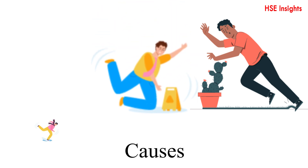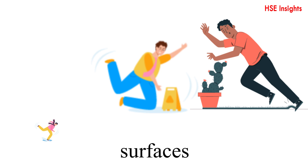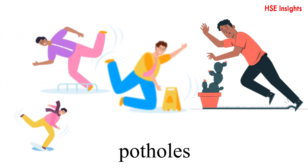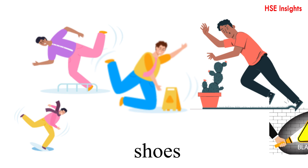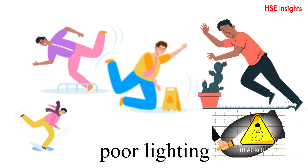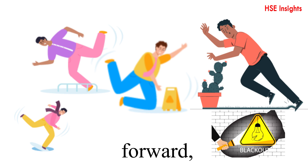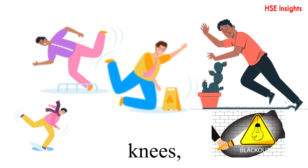Common causes include uneven surfaces, stairs, curbs, potholes, clutter, toys, cables, shoes, or poor lighting, making it difficult to see obstacles. You typically trip forward, leading to falls on your hands, knees, and face.